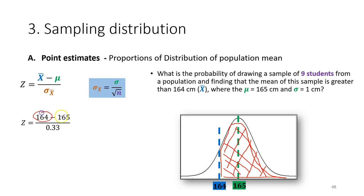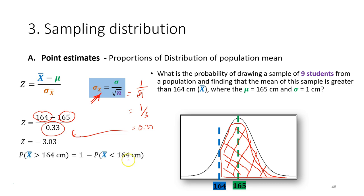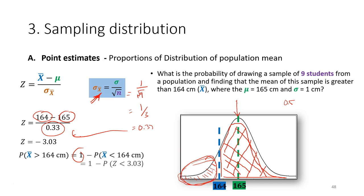For the point estimate calculation, put in the sample mean and the population mean, and make sure you calculate the standard error: it is 1 divided by the square root of 9, which is 1 divided by 3, giving 0.33. You substitute this into the z-score formula, then refer to the z-table. Because the standard normal curve is symmetric, the z-table gives a maximum of 0.5, so you calculate 1 minus the probability from the z-table to get the answer.